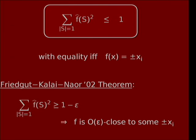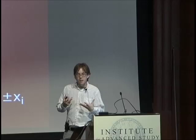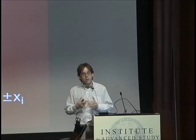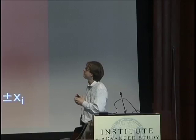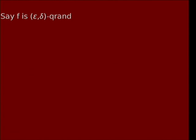We can try to exclude the dictator cases by considering quasi-random functions instead. If F is epsilon-delta-quasi-random, meaning all its Fourier coefficients of degree up to 1/delta are at most epsilon, then for this argument you only need what I'd call epsilon-1-quasi-random: all the Fourier coefficients at degree exactly one are small. So f-hat-i is at most epsilon in absolute value for each i equals one through n. Now we want to study the sum of squares of the degree-one Fourier coefficients.